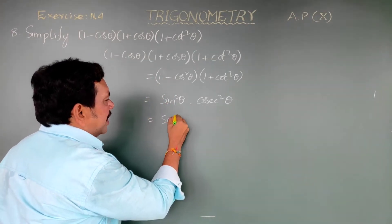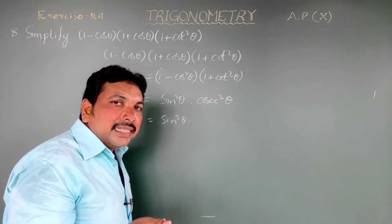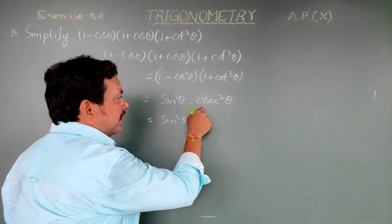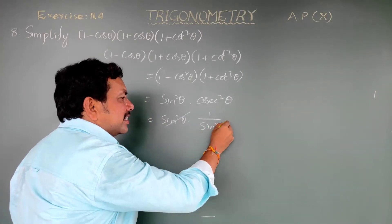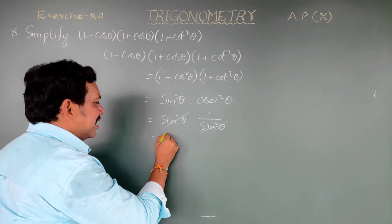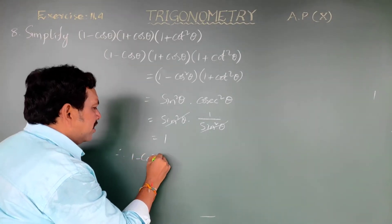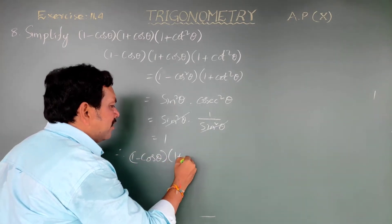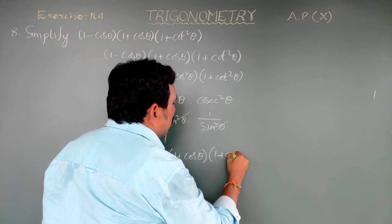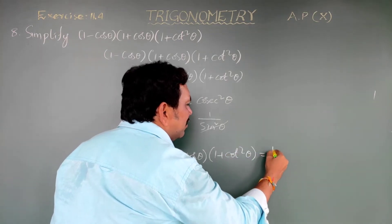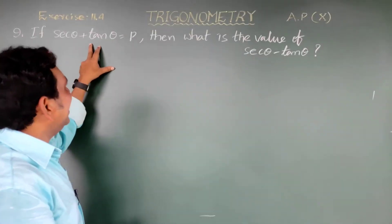So the expression becomes sin square theta into cosecant square theta. Since cosecant theta is the reciprocal of sin theta, cosecant square theta can be written as 1 by sin square theta. Here, sin square theta and sin square theta get cancelled, giving the answer 1. Therefore (1 minus cos theta)(1 plus cos theta)(1 plus cot square theta) equals 1.